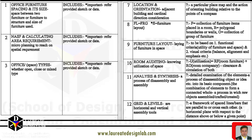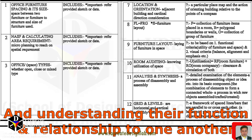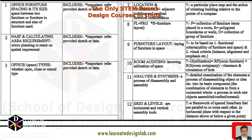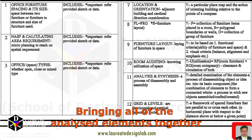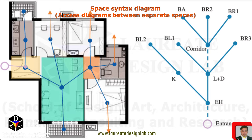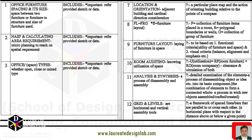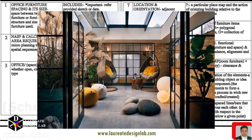Analysis and synthesis are key techniques used in the planning of interior and architectural spaces. Analysis involves breaking down a space into its individual elements and understanding their function and relationship to one another. This includes studying factors such as light, color, sound, and circulation. Synthesis, on the other hand, involves bringing all of the analyzed elements together to create a cohesive and functional space. This includes considering how the space will be used, who will use it, and what activities will take place there. By using both analysis and synthesis, designers can create spaces that are not only beautiful but also functional and meet the needs of the people who will use them.